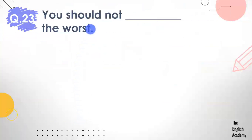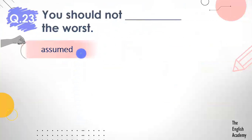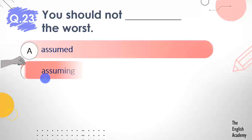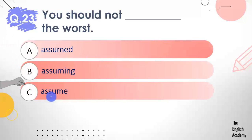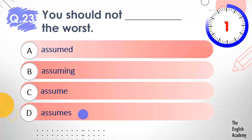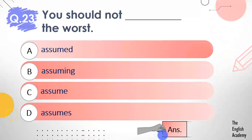Question number 23: You should not ___ the worst. Options: A) assumed, B) assuming, C) assume, D) assumes. The answer is option C — assume. You should not assume the worst.